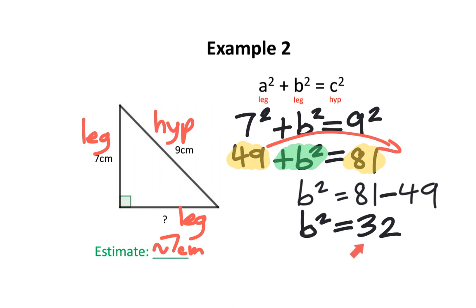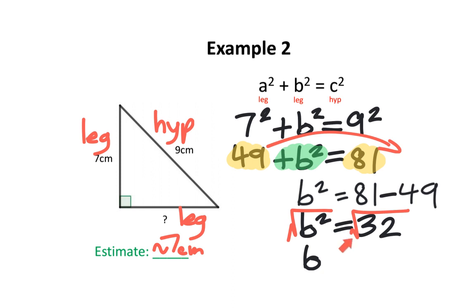Hold on — 32 is very different from our estimate of about 7 centimeters. Is there something else we need to do? And there is. The opposite of an exponent of 2 is a square root, so I'm going to square root b to the power of 2, and do the same thing to the other side. Since the square root and the exponent are opposites, they cancel out, leaving just b. Using our calculator, we can find the square root of 32, which is approximately 5.7. We estimated the unknown leg to be about 7 centimeters, but our calculations determined it to be exactly 5.7 centimeters.